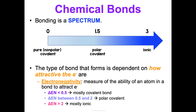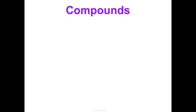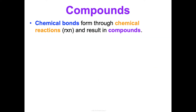So it's a continuous spectrum. For the sake of simplicity, we'll teach the different types of bonds in distinct categories, but please don't forget that bonding is a spectrum — that's really important. Chemical bonds are formed through chemical reactions — from now on, RXN is an abbreviation for reaction that I'll use a lot to make notes shorter.